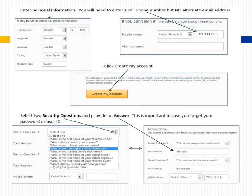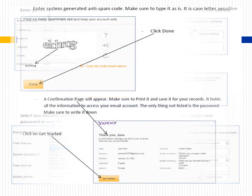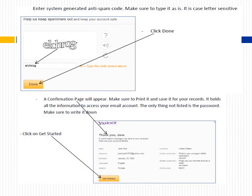Enter your personal information. You will need to enter a cell phone number, but no alternate email address is required. Click Create My Account. Select two security questions and provide answers — this is important in case you forget your password or user ID. Enter the system-generated anti-spam code exactly as shown; it is case-sensitive. Click Done. A confirmation page will appear — print it and save it for your records, as it holds all the information needed to access your email account. The only thing not listed is the password, so make sure to write it down. Then click Get Started.